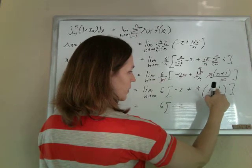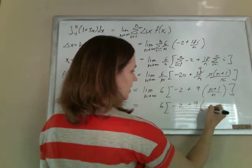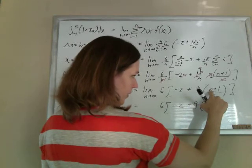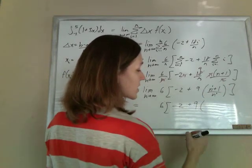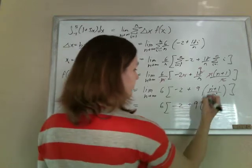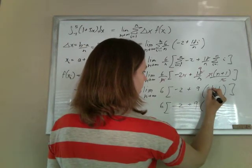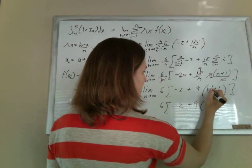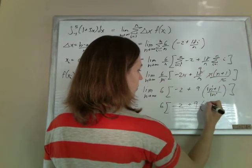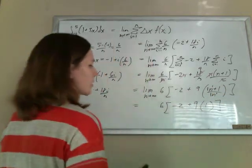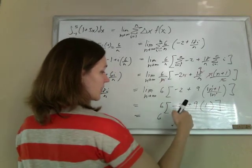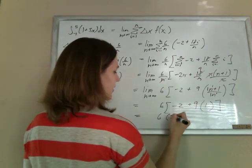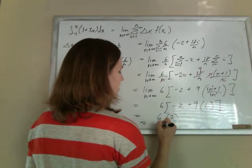And the limit of n plus 1 over n, the 9 can just chill, it's a constant. Limit of n plus 1 over n, polynomial over polynomial with the powers matching, as they will if you've done things right. If the powers match, you can take the coefficients. So 1 over 1 is just a 1. You could also do L'Hopital's rule there. It'll get you the same thing. So now, no more limit. Negative 2 plus 9 is 7. So 6 times 7 is 42.